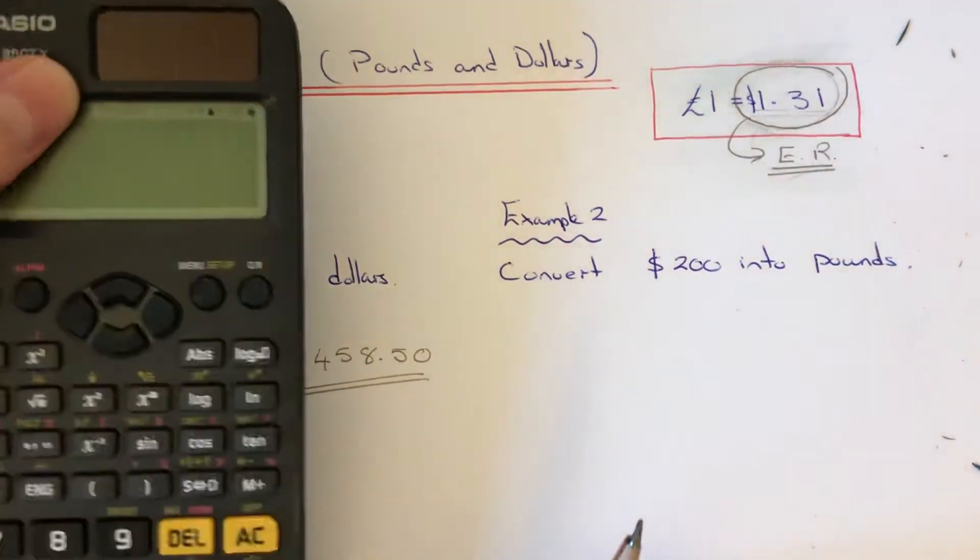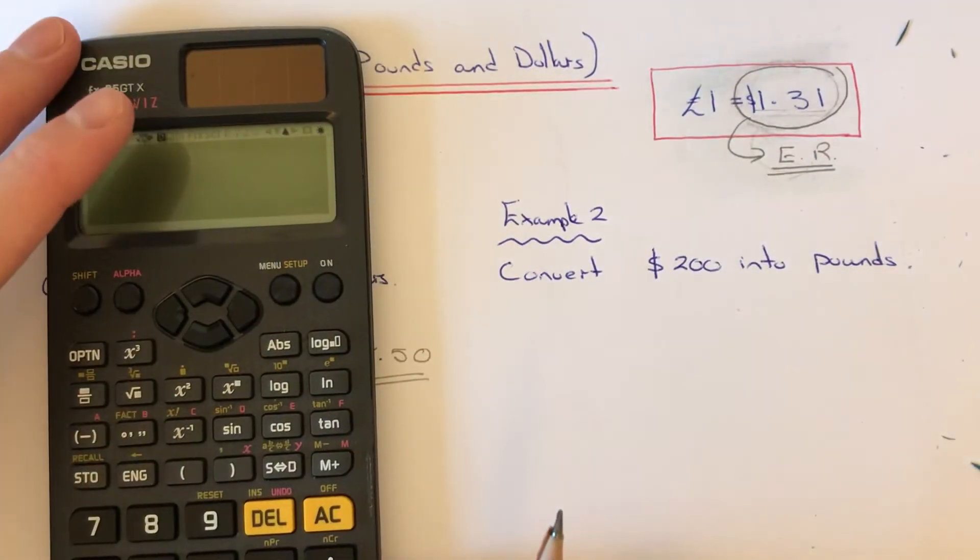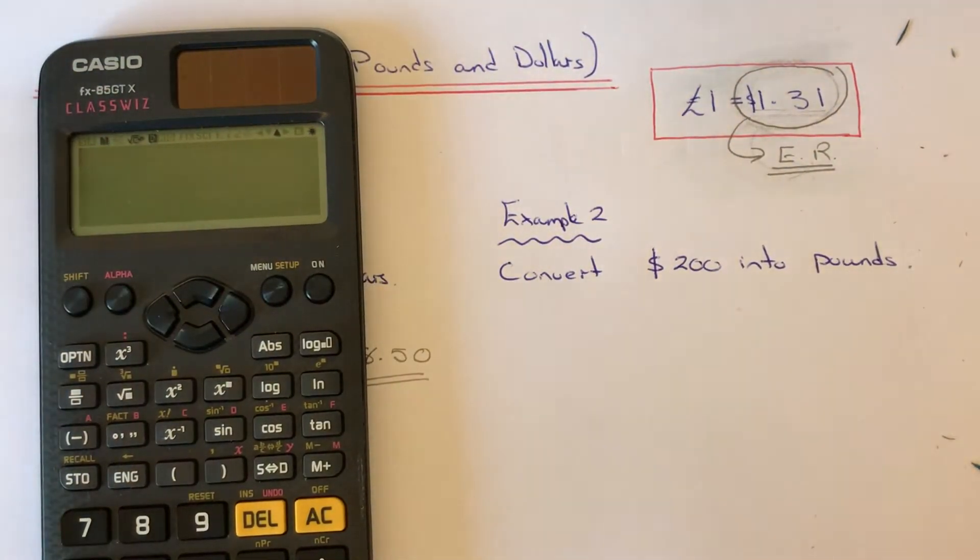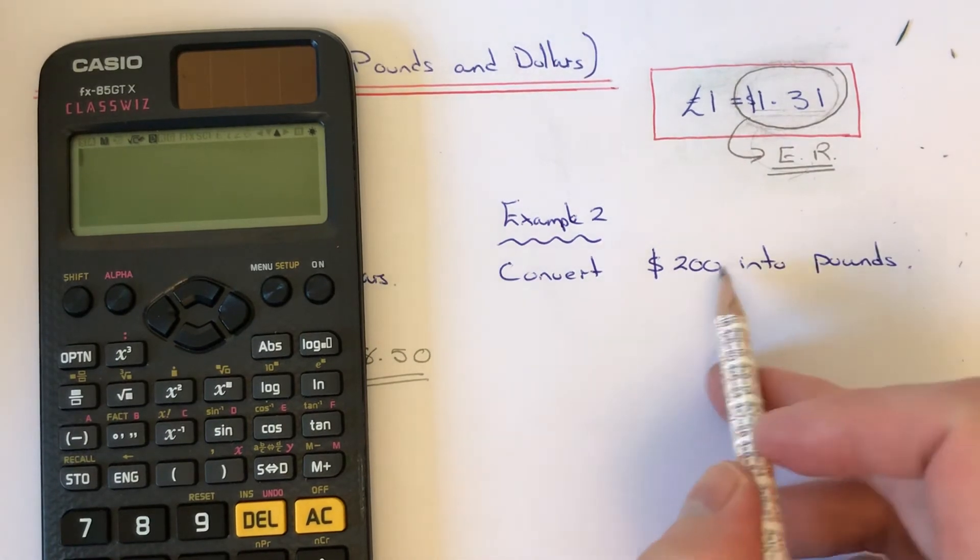So this time we need to convert two hundred dollars into pounds. So on this one, instead of multiplying by the exchange rate, we now have to divide by the exchange rate number instead. So if you copy your amount down, two hundred dollars, and this time we divide by the exchange rate which is 1.31.